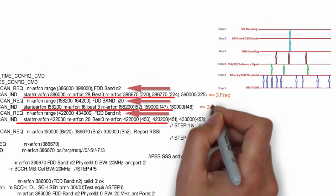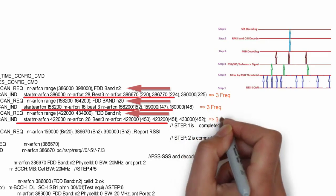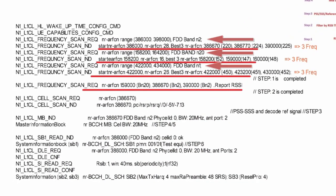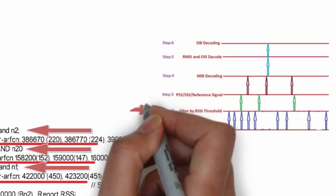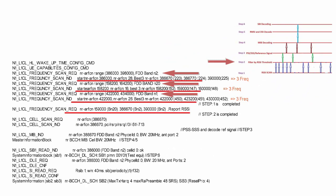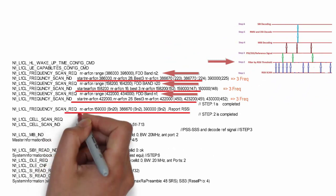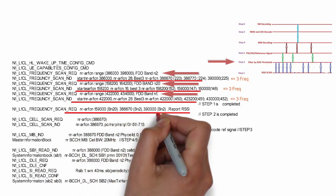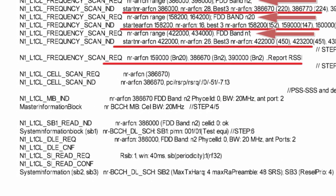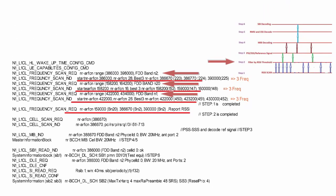In Step 1, the physical layer prepares a list of 9 frequencies. In Step 2, it figures out all channels which show RSSI value greater than the threshold value. The physical layer component prepares a list of frequencies where RSSI is greater than threshold. In total, 3 frequencies remain: NR-ARFCN 159000 for band N20, 386670 for band N2, and 390000 for band N2. So band N2 has 2 frequencies and band N20 has 1 frequency above threshold. Step 2 process is completed. Up to Step 2, LTE and 5G processes are the same.